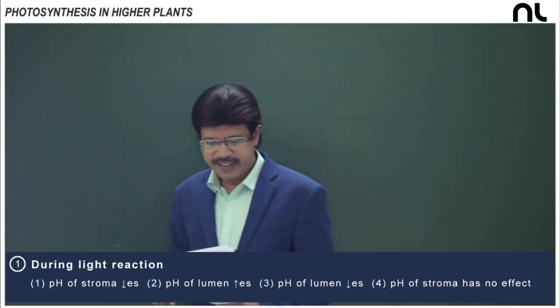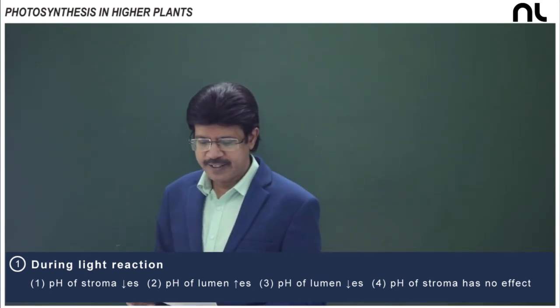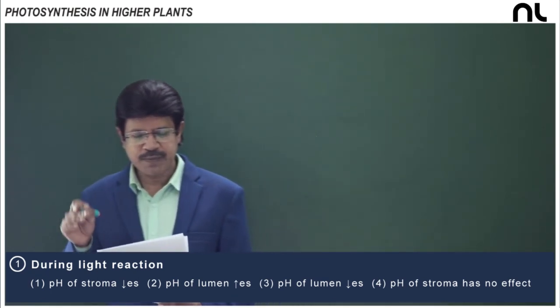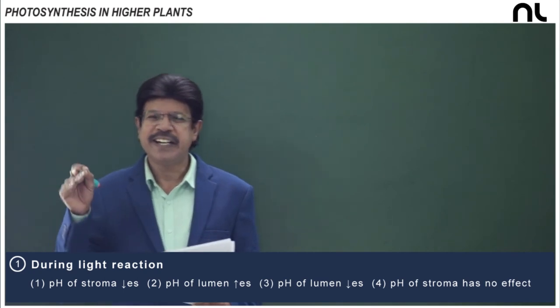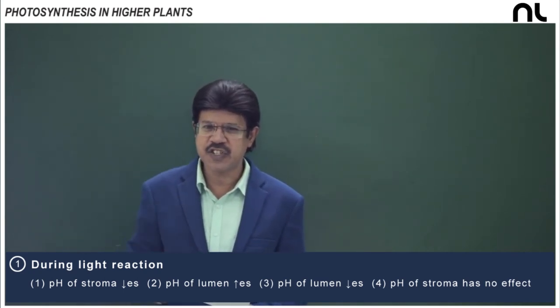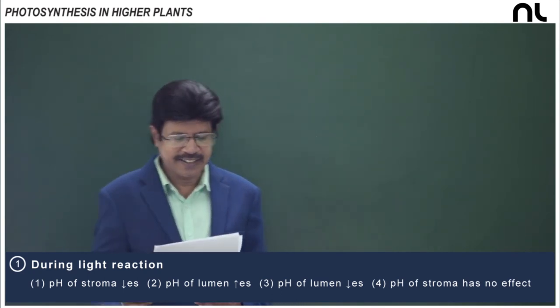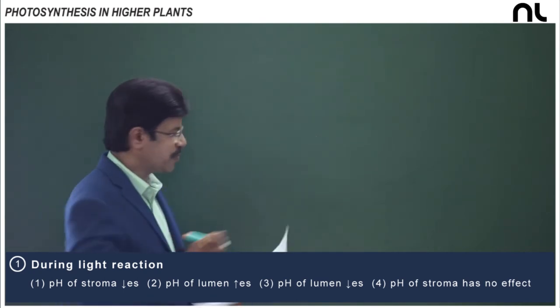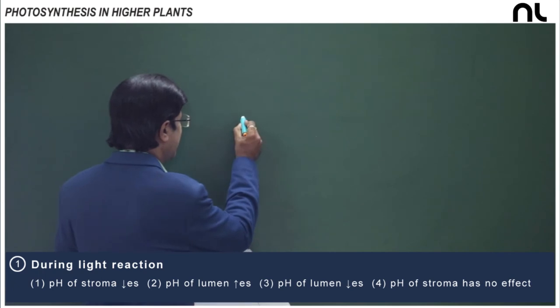So the correct option is: pH of the lumen decreases, and proton concentration in the lumen increases. The right answer is the third option.